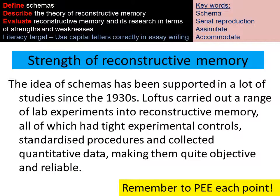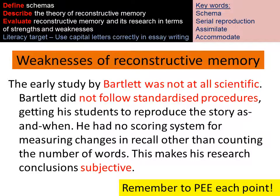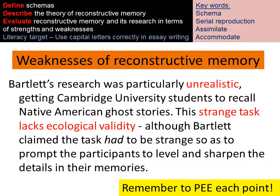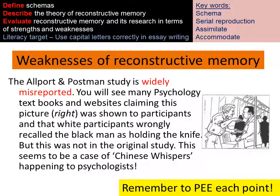When evaluating reconstructive memory as a theory, the best approach is to look at the supporting evidence. The idea of schemas has been supported by a lot of research, including lab studies like Loftus's, which had tight experimental controls, standardised procedures, and quantitative data, making them objective and reliable — meaning if we repeated the experiment, we'd expect the same findings. However, Bartlett's research was not scientific, lacked a standardised procedure, and because Bartlett interpreted his own conclusions they could be subjective. Bartlett's research is also unrealistic in that the task was very strange to participants and not something they would do every day, so we could argue Bartlett's study lacks ecological validity. Furthermore, Allport and Postman's study is widely misreported by psychologists — some have incorrectly described which picture was originally shown to participants.